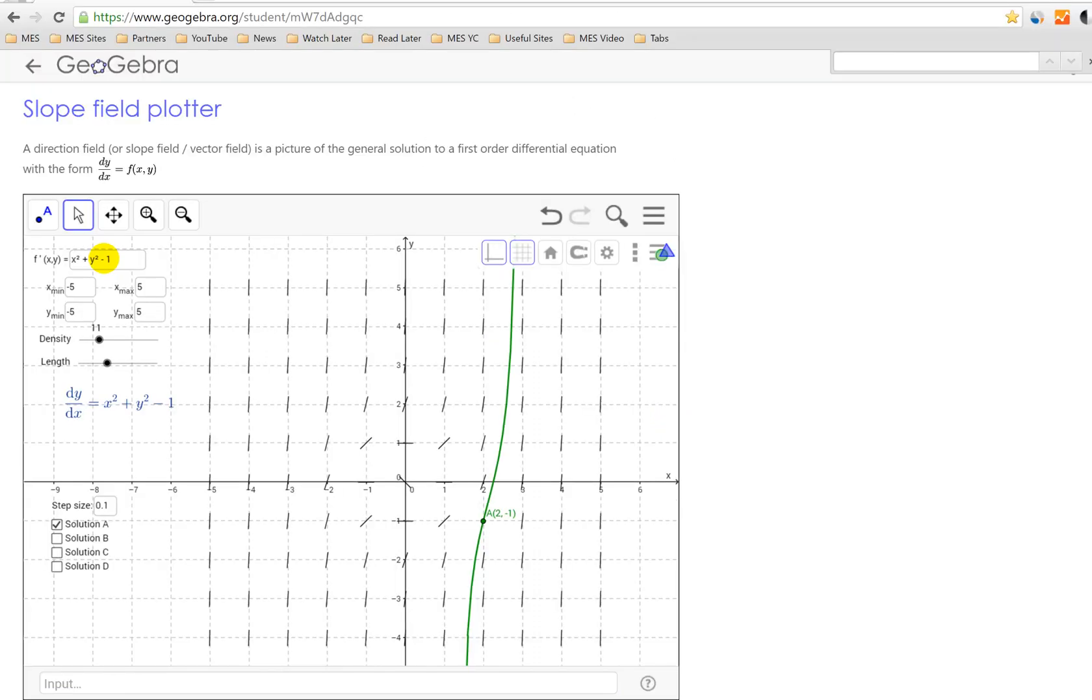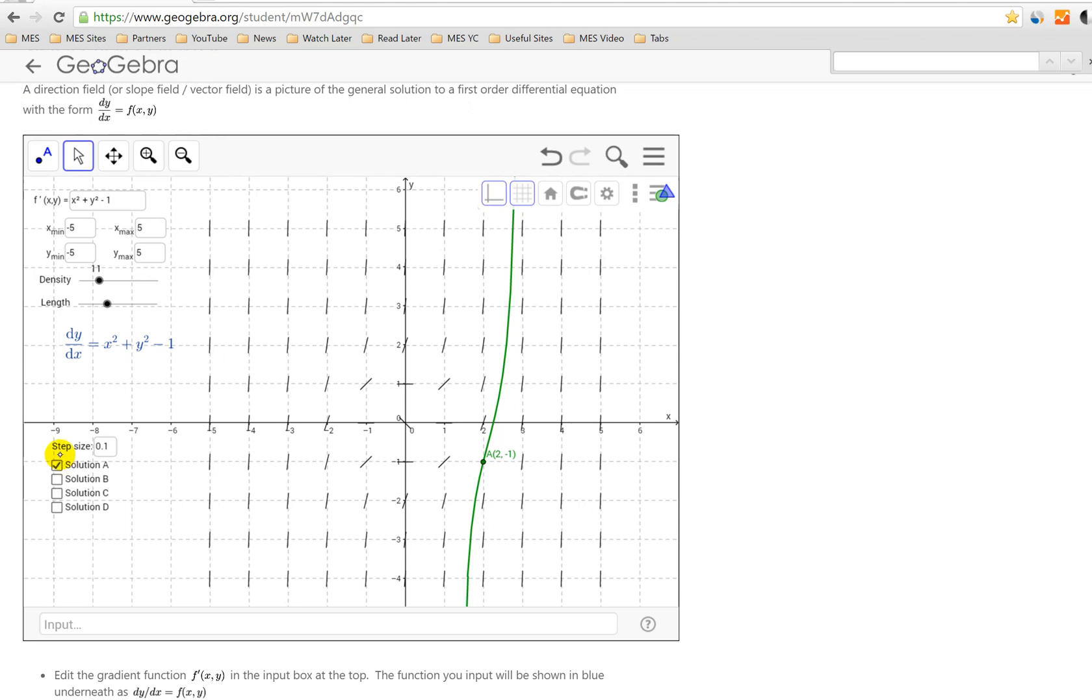And here, this is just a random direction field or slope field plotter generator that's pretty useful. I went over this one in my last video. Basically, when you plug it in, this is our differential equation: f'(x, y) = x² + y² - 1.